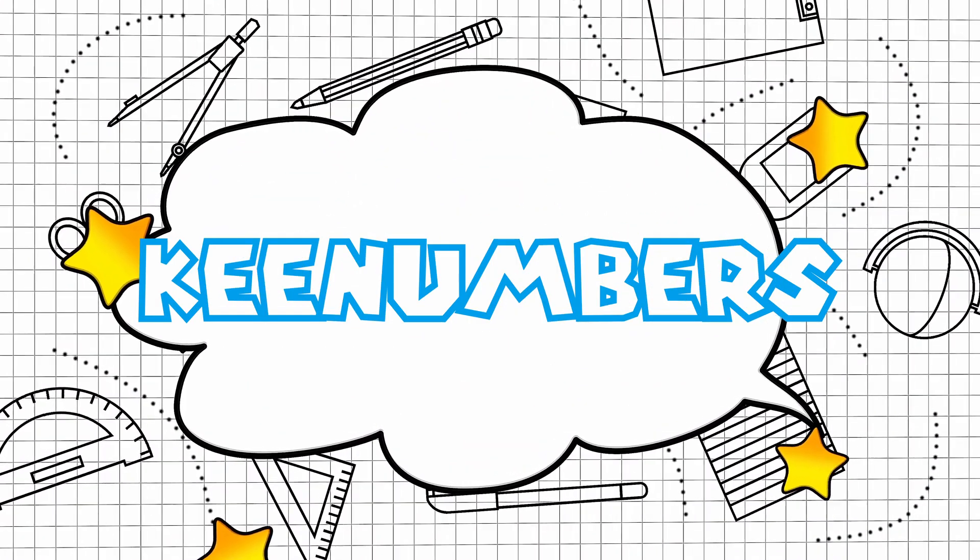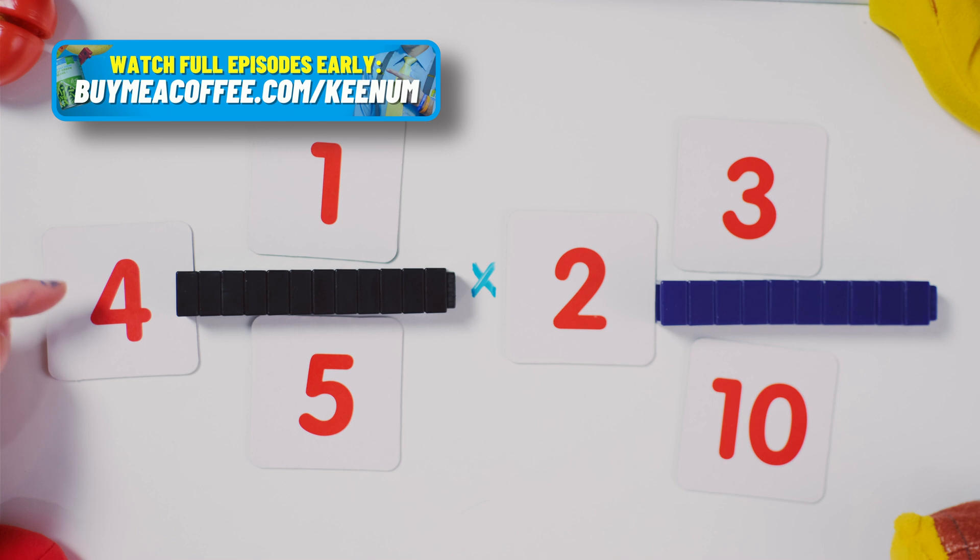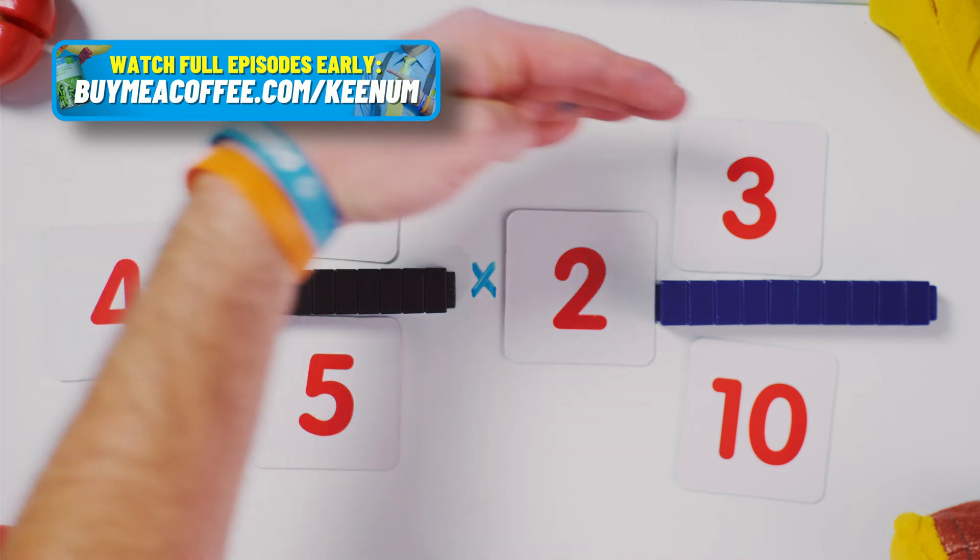Welcome to the bonus section. Mixed number by mixed number. Step one, convert to improper fractions. Step two, lose your mind. Step three, multiply straight across.